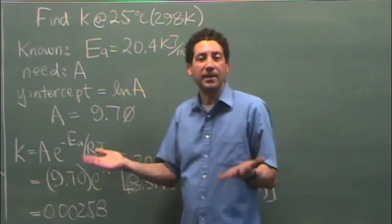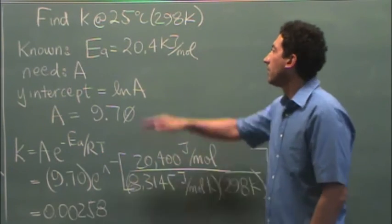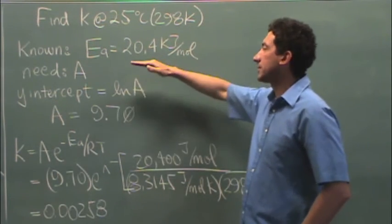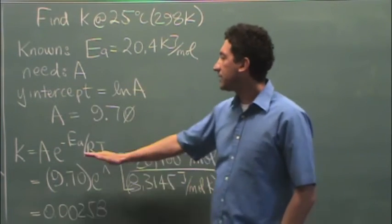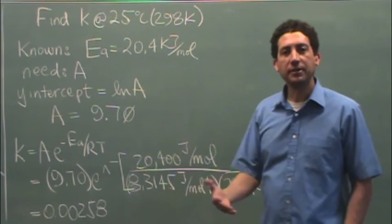So how do you find k at any given number? Well, again, we know from the slope previously, we found the activation energy. You need A to plug it into the Arrhenius equation. So how do you find A?